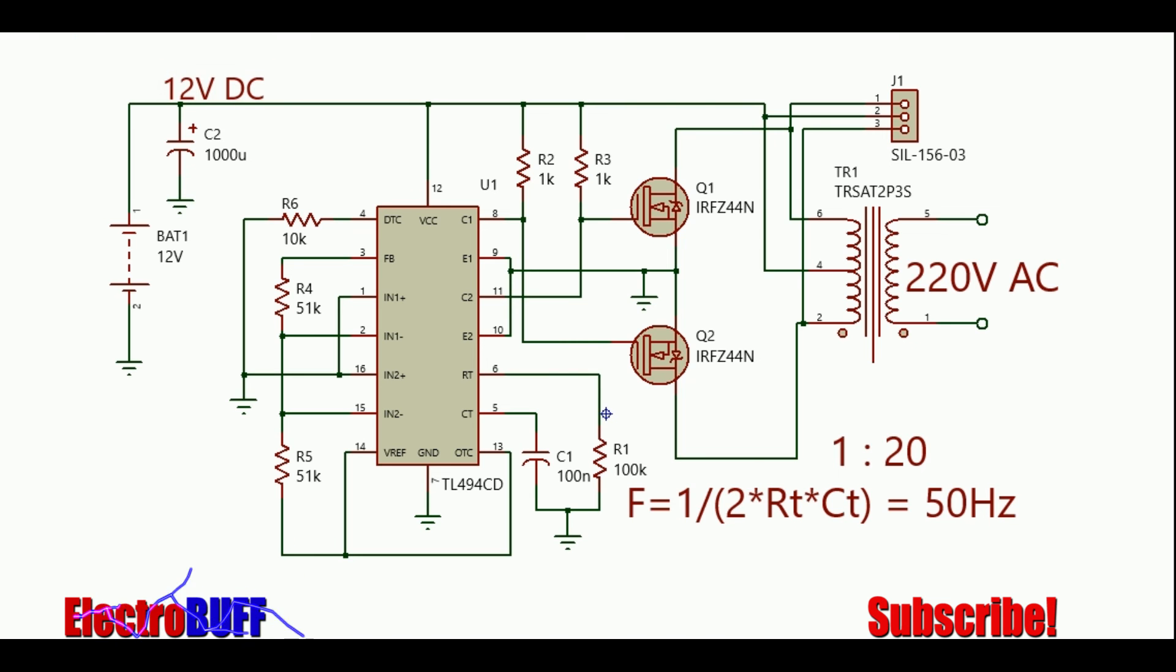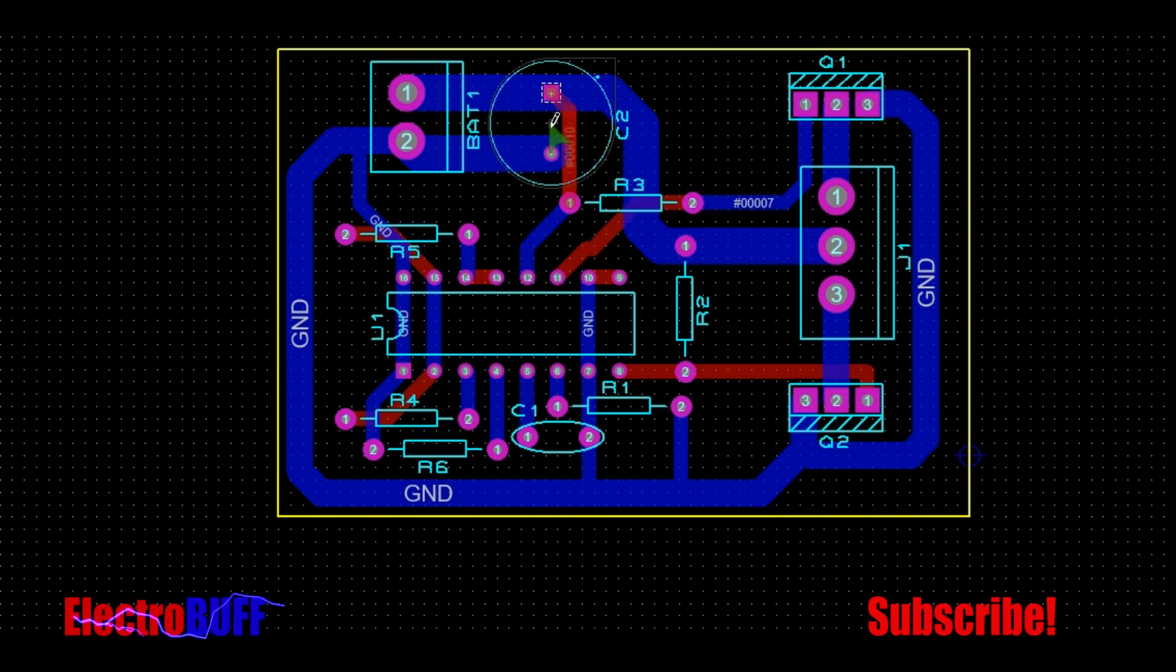The PCB is as shown. Here you have your input, this is the input decoupling capacitor, this is the IC and its supporting components. This is the second MOSFET and the first MOSFET. Here you connect your primary winding, this is the center tap, this is one side of the primary winding on the other end.